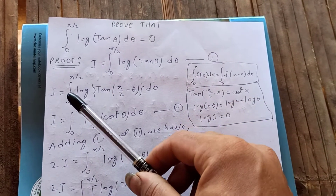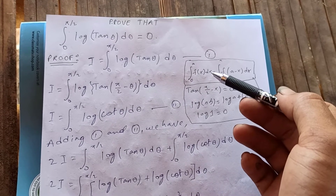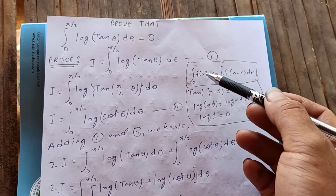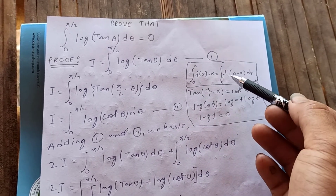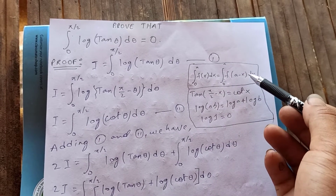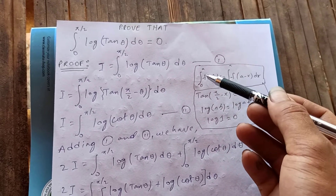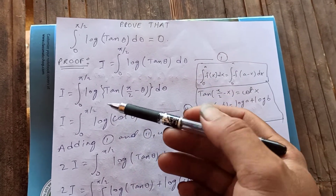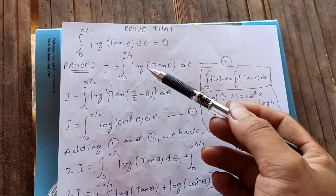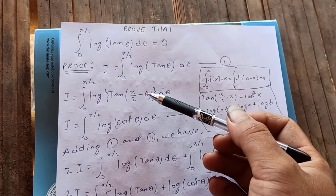We know from the property of definite integrals that the integral from 0 to a of f(x) dx equals the integral from 0 to a of f(a minus x) dx. Using this property, I is equal to the integral from 0 to pi over 2 of log(tan(pi/2 minus θ)) dθ.